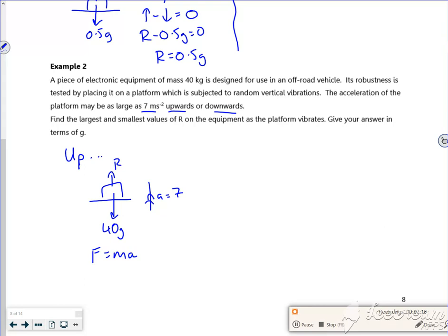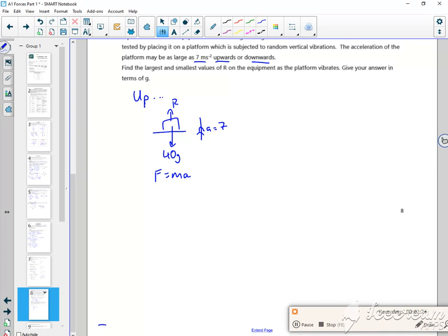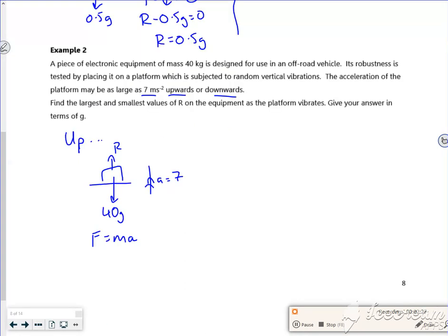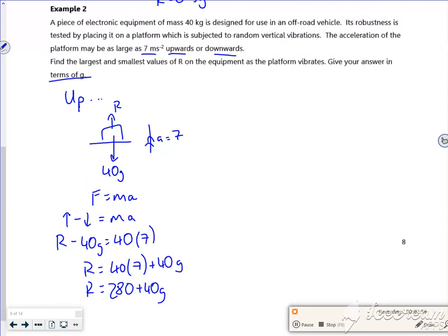Normally, everything vertically is fine. It's just in equilibrium. But this one's bouncing it up and down. So my resulting force, which is up minus down, is equal to mass times acceleration. Up is R, 40g is opposing it, and the mass is 40 and the acceleration is 7. So R equals 40 times 7 plus 40 times g. R is 280 plus 40g. Now, it doesn't tell us what g is, does it? Oh, it says answer in terms of g.